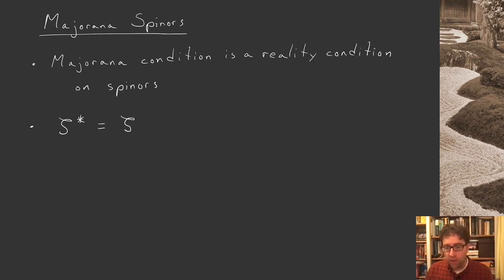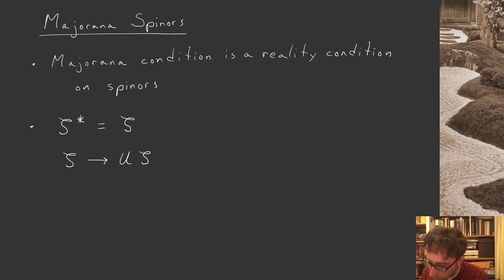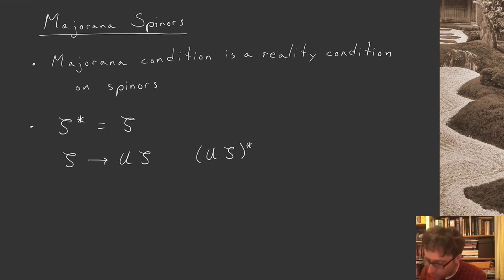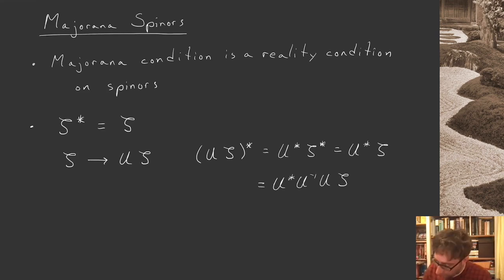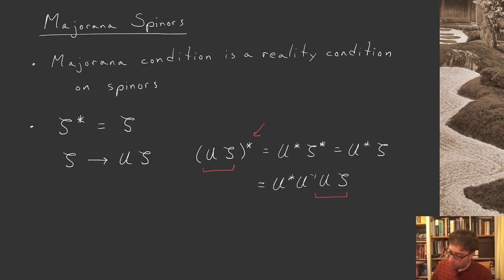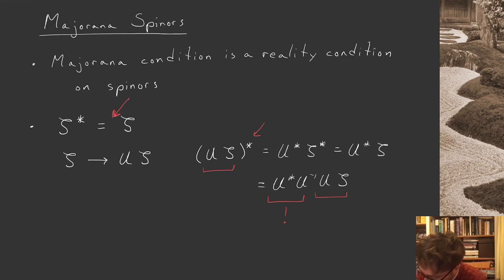Remember, we have this fact that we can generate new representations of the Clifford algebra through unitary transformations. So we're allowed to have some unitary matrix U and act with it on our spinor. Let's see how this affects the reality condition. If we take the complex conjugate of U times zeta, we can write that as U* zeta*, and by the reality condition, that ought to be U* zeta. Inserting the identity as U* U⁻¹ U, we see that after the unitary transformation, there's a funny matrix U* U⁻¹ involved in the reality condition.